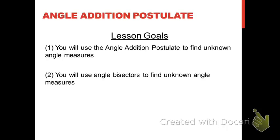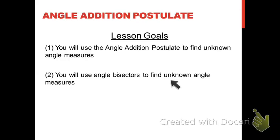Hello everybody. We've been working with measuring angles in our current couple of lessons, and what we're going to work on right now is something involving angle measures. We're going to look at the angle addition postulate. In the lesson goals, we're first going to use the angle addition postulate to find unknown angle measures, and then we're going to look at angle bisectors and how you use angle bisectors to also find unknown angle measures.